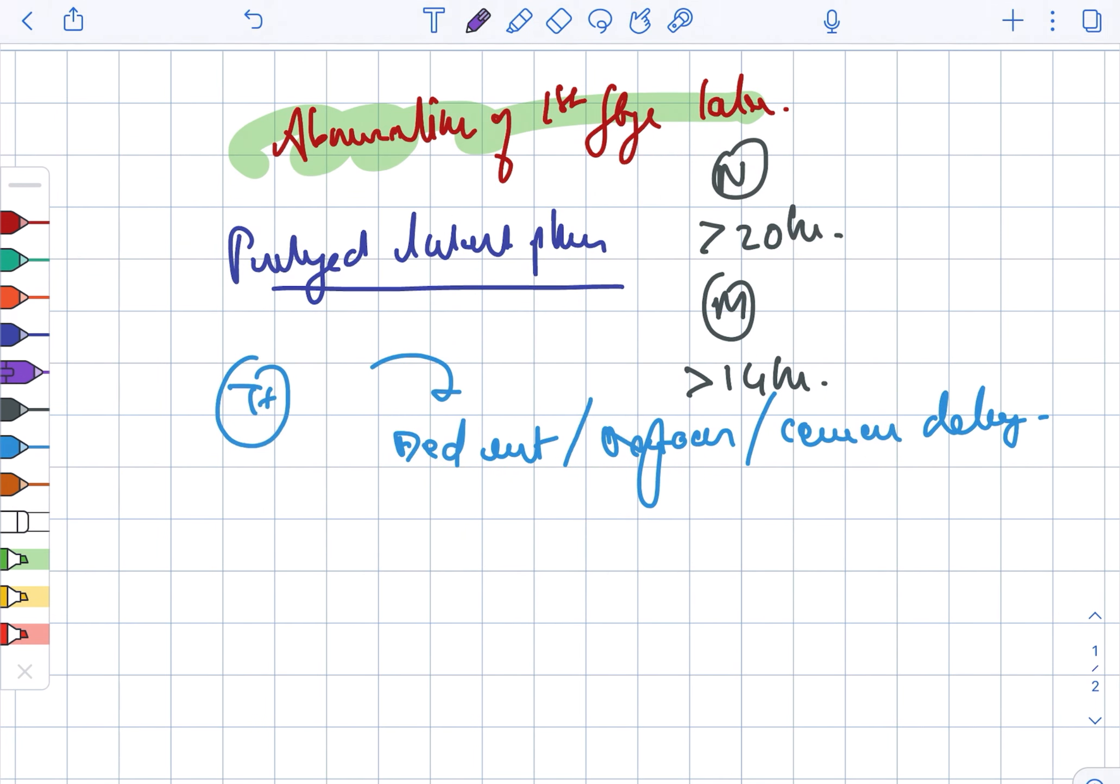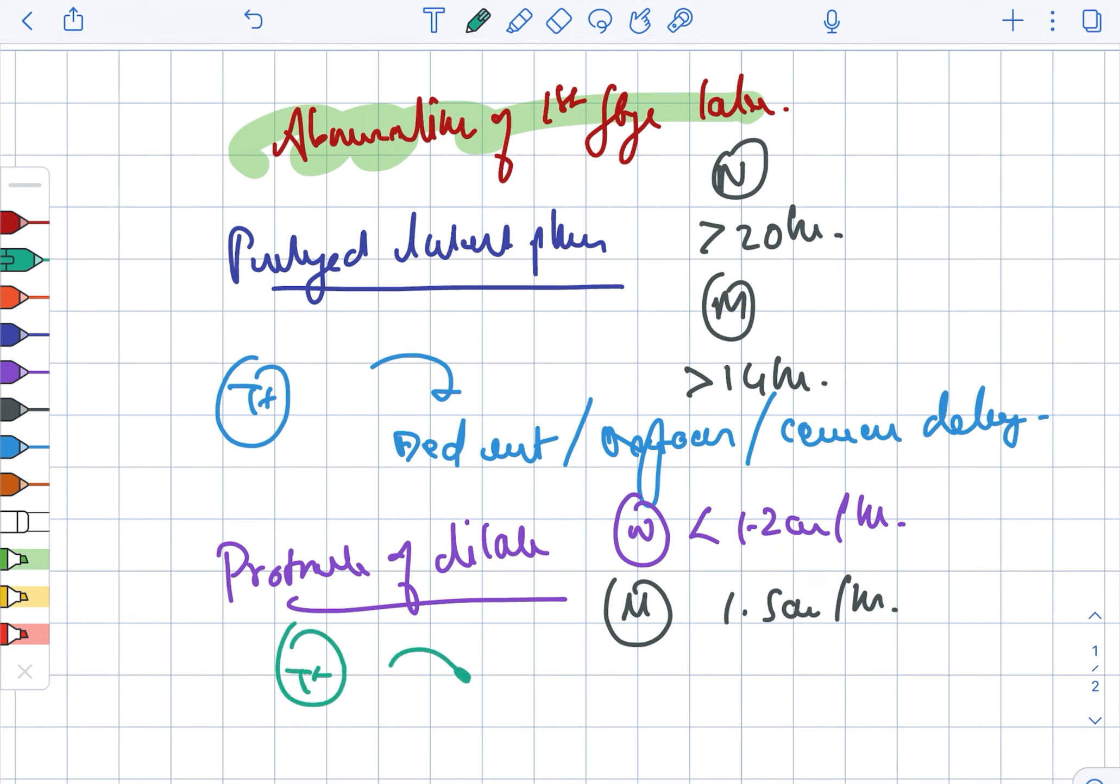Next, we are looking at the protraction of dilation. In case of nullipara, it is less than 1.2 cm per hour. In case of the multipara, it is 1.5 cm per hour. The treatment is expectant management and support.